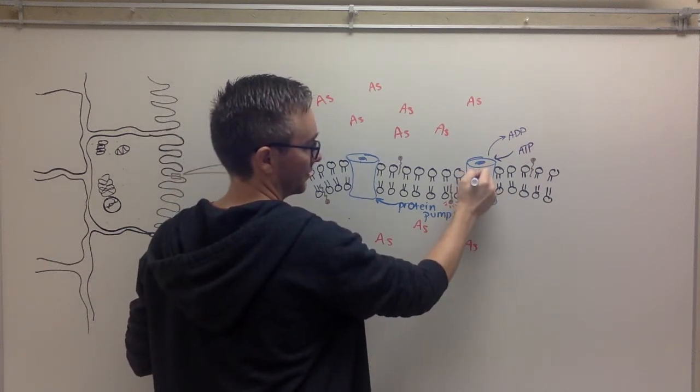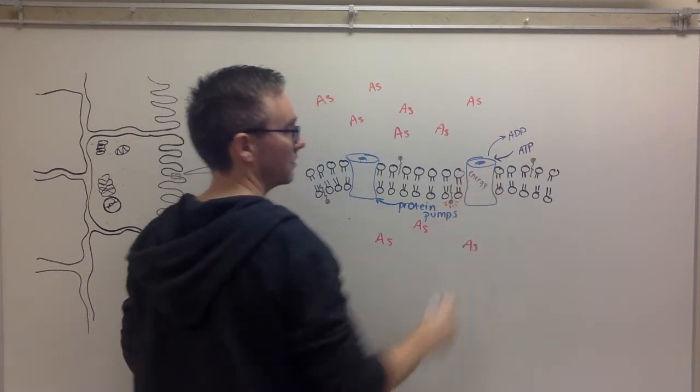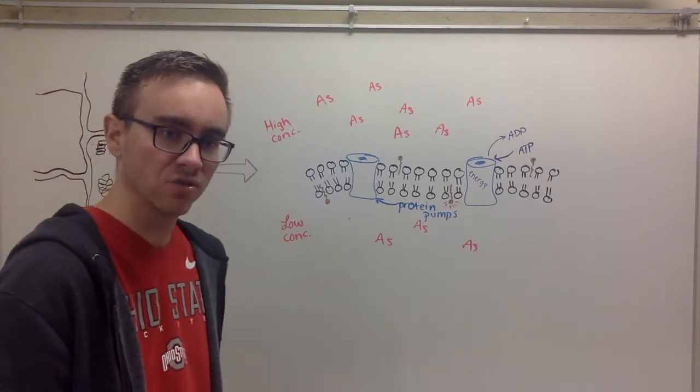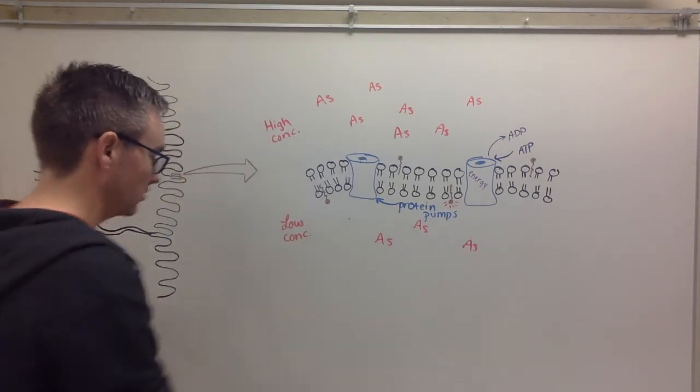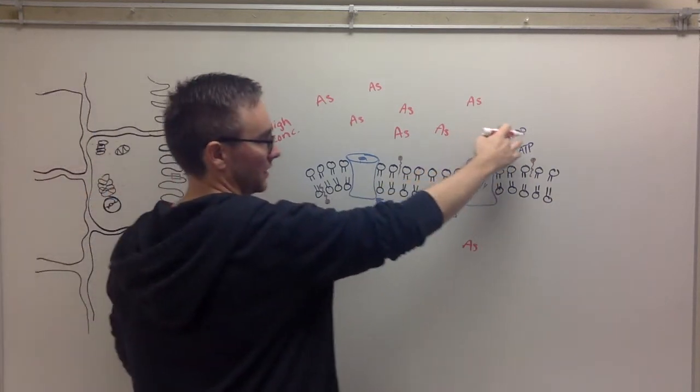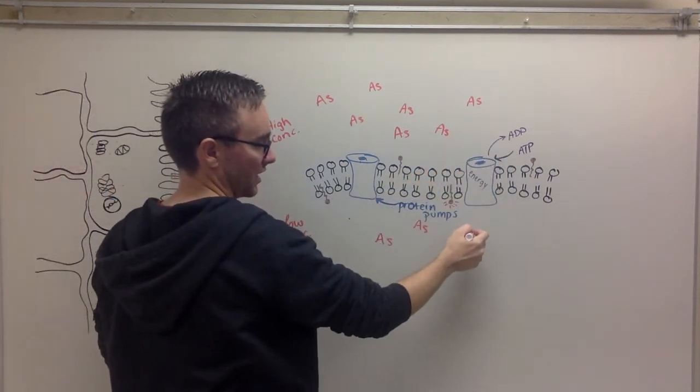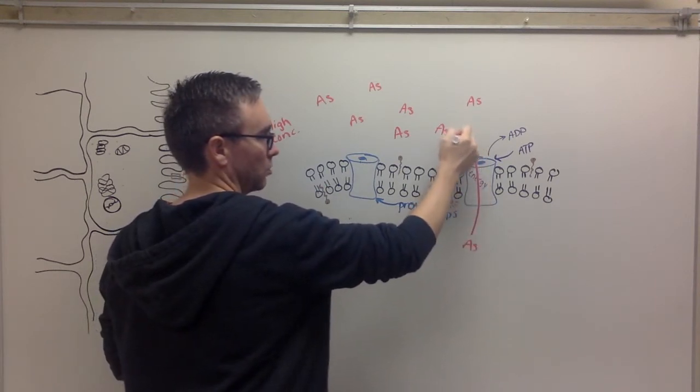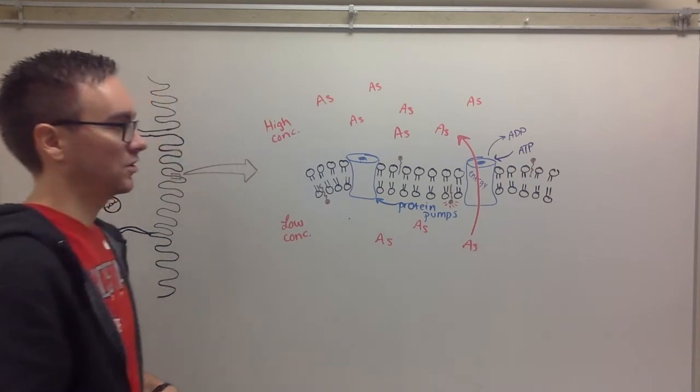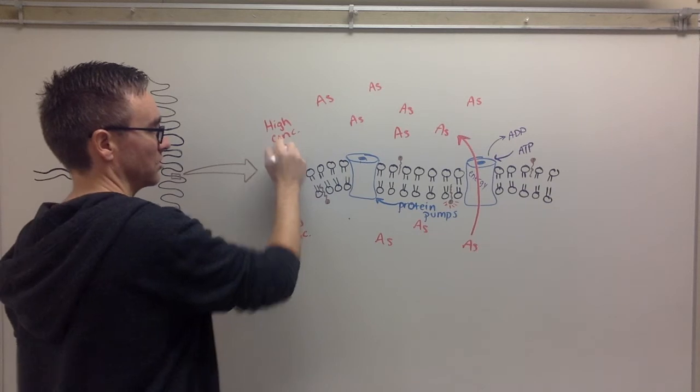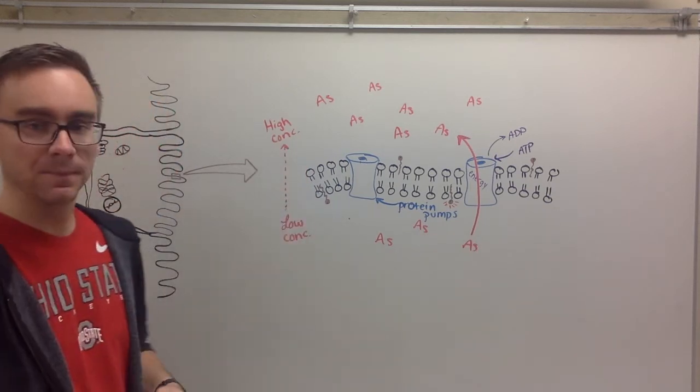It gives energy to that pump and outside energy to allow it to go from a low concentration to a high concentration to push the ball up the hill. That ATP uses that chemical energy to make or to allow that protein pump to push the arsenic to go from a low concentration to a high concentration.